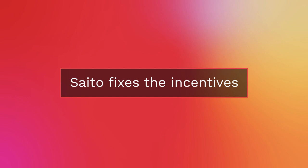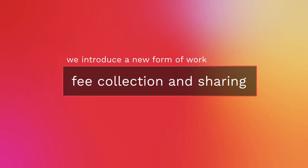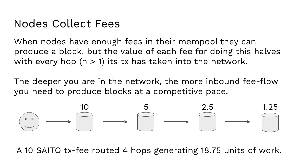This is the problem that Saito fixes, and it does it by fixing the incentives in the consensus mechanism. We're going to eliminate economic attacks on the consensus layer by making it impossible for people to extract more value from the network than they're actually contributing. Saito introduces a new form of work — the collection and sharing of money — so you actually have to pay peers in the network for the right to get paid. All nodes in the network collect fees in their mempool, and when they've got enough fees to pass a difficulty threshold, they're able to produce a block.